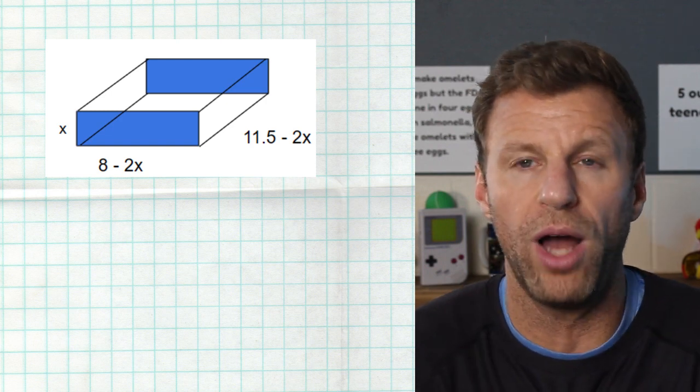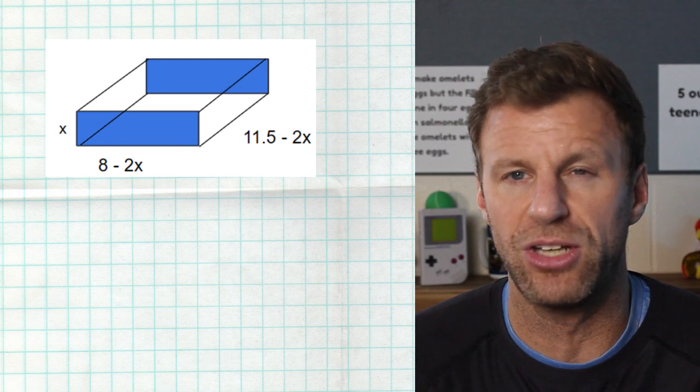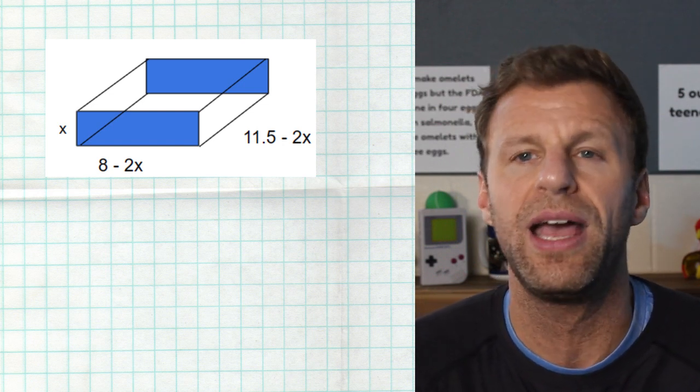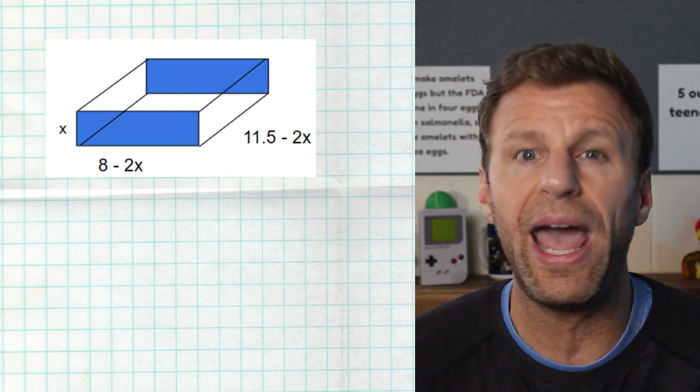It doesn't really matter. As long as you know that one side of the box is eight minus two x. The other side of the box is 11 and a half minus two x.